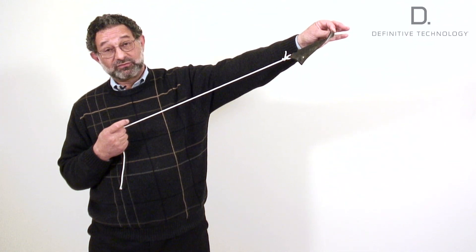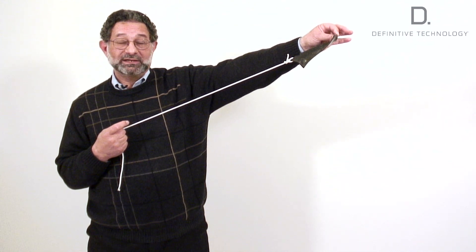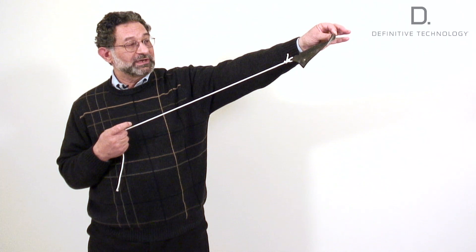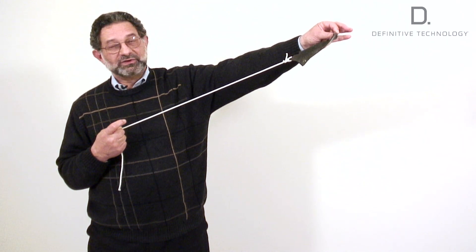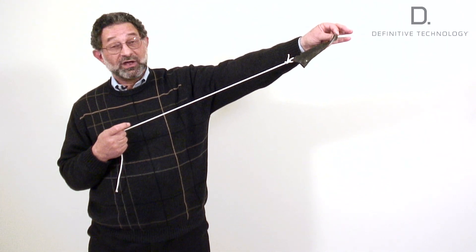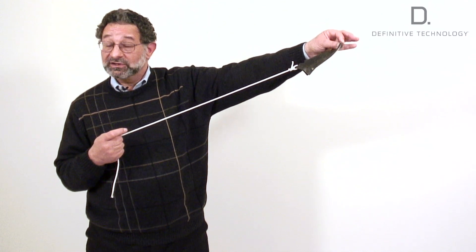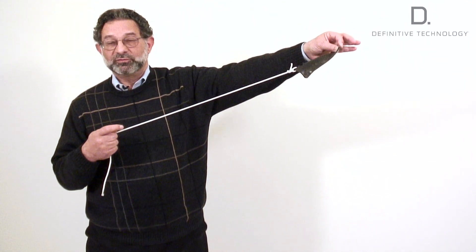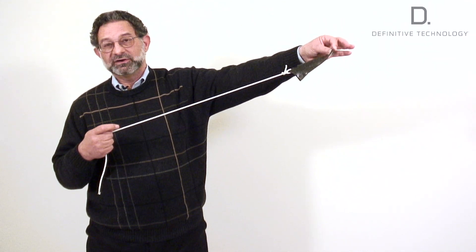It's not reflecting it back through the cone again, the way it did when my hand was holding it. So this is one of the reasons why we use soft butyl rubber surrounds in Definitive loudspeakers, to absorb resonance for better sound.